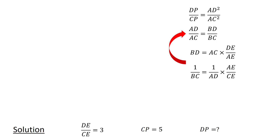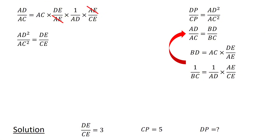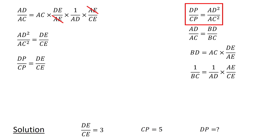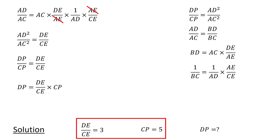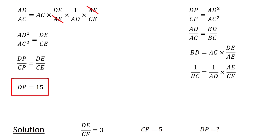Substituting the expressions for BD and 1 over BC into the equation AD over AC equals BD over BC, we obtain AD over AC equals AC times DE over AE times 1 over AD times AE over CE. Observe that AE cancels out, and after rearranging, we obtain AD squared over AC squared equals DE over CE. Since DP over CP equals AD squared over AC squared, we have DP over CP equals DE over CE, or DP equals DE over CE times CP. Since DE over CE equals 3 and CP equals 5 units, we have DP equals 3 times 5, or 15 units, which is the solution to our problem.